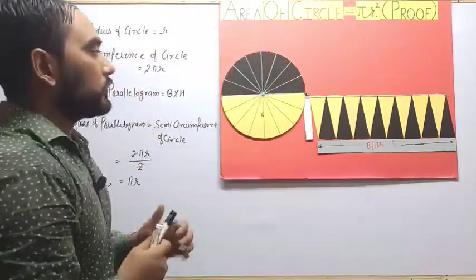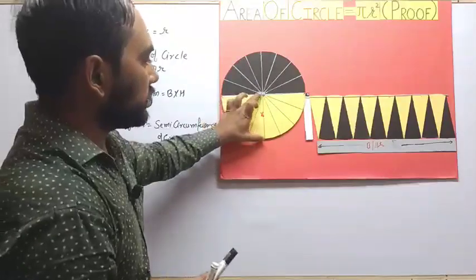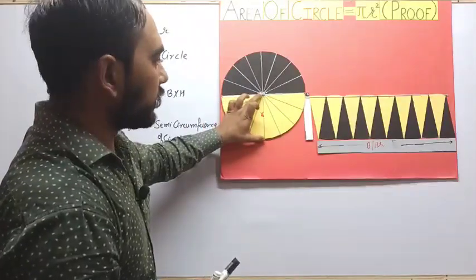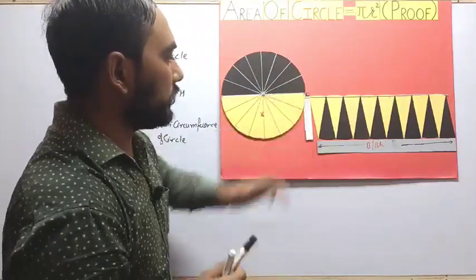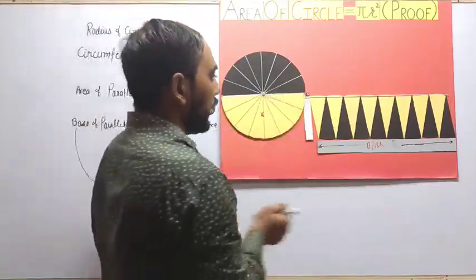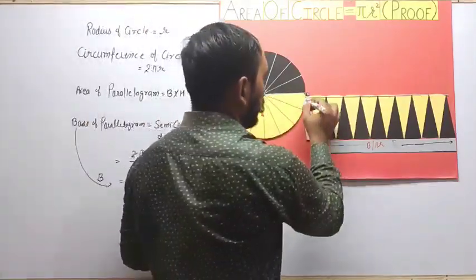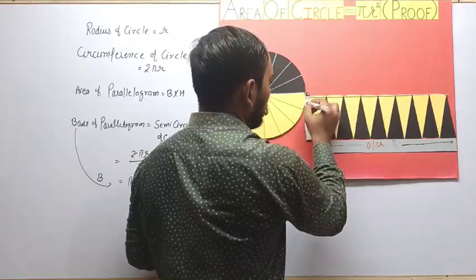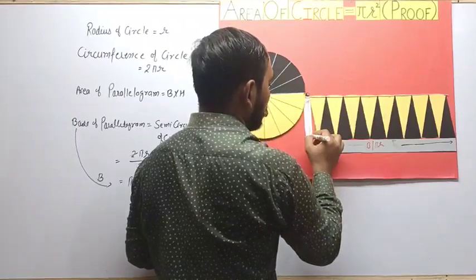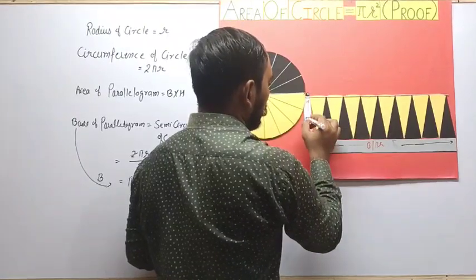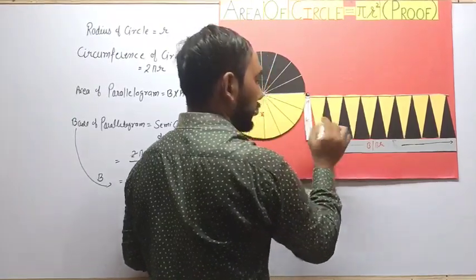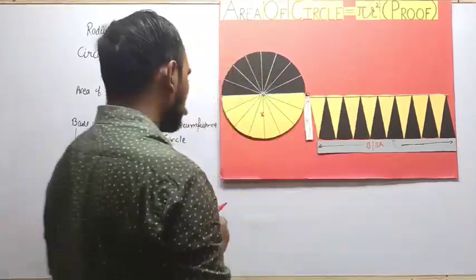Now we look at the radius of the circle. This radius of the circle is equal to the height of the parallelogram. So the height of the parallelogram equals r.